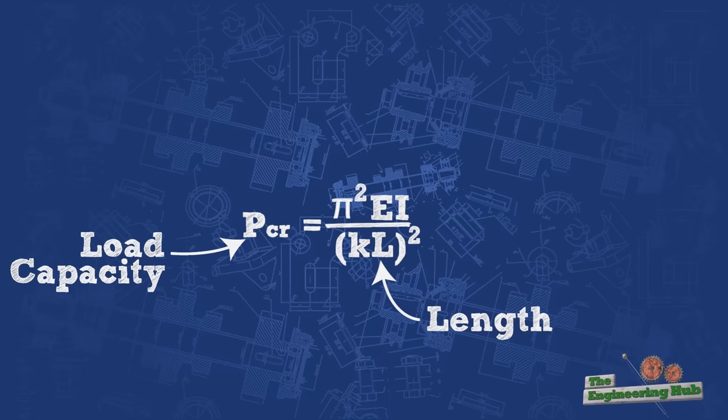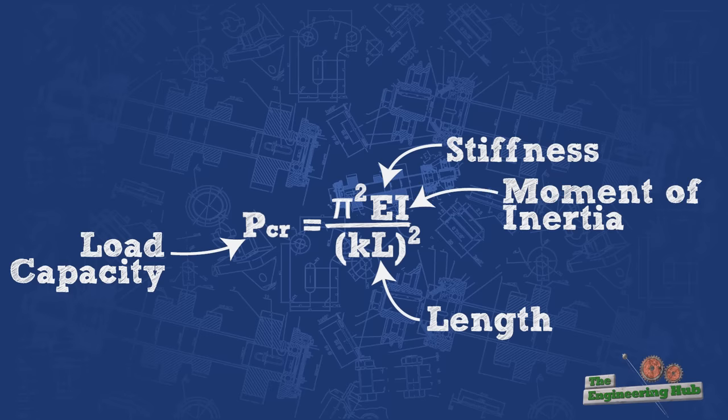Furthermore, we know that the stiffness of the material has to also play a role, because stiffer materials are harder to bend. The same goes for the shape of the column, whose effects are captured by the moment of inertia of the column.